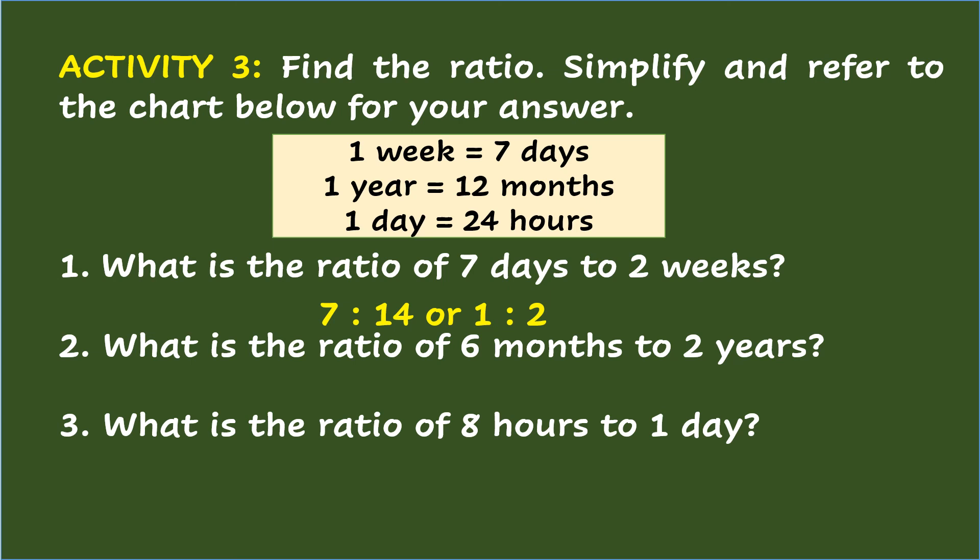Number 2: What is the ratio of 6 months to 2 years? Changing 2 years to months gives an equivalent of 24 months. So the ratio of 6 months to 2 years is 6 is to 24, or simplifying it is 1 is to 4. Number 3: What is the ratio of 8 hours to 1 day? Getting the total number of hours in 1 day gives an equivalent of 24 hours. So the ratio of 8 hours to 1 day is 8 is to 24, or simplifying it is 1 is to 3.